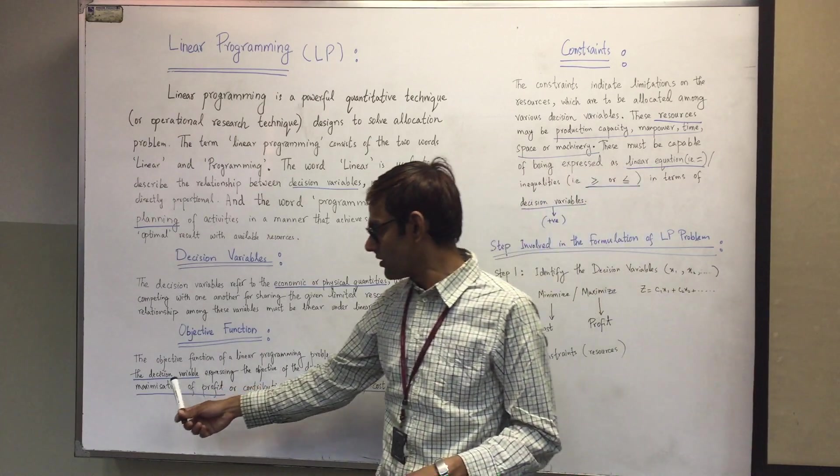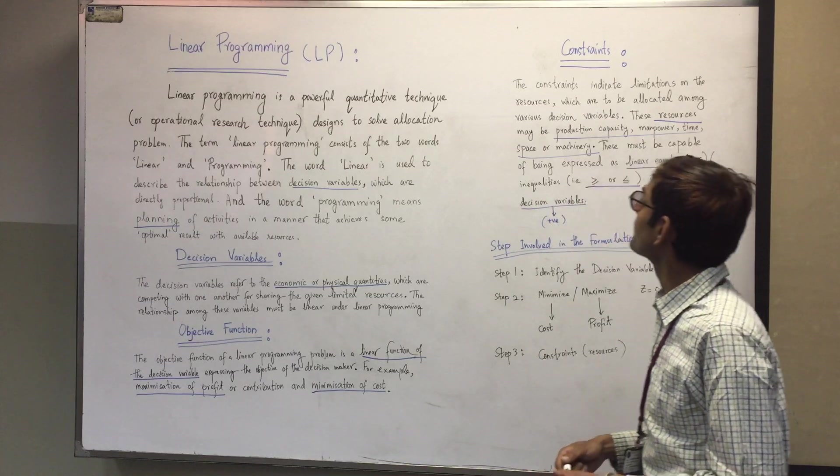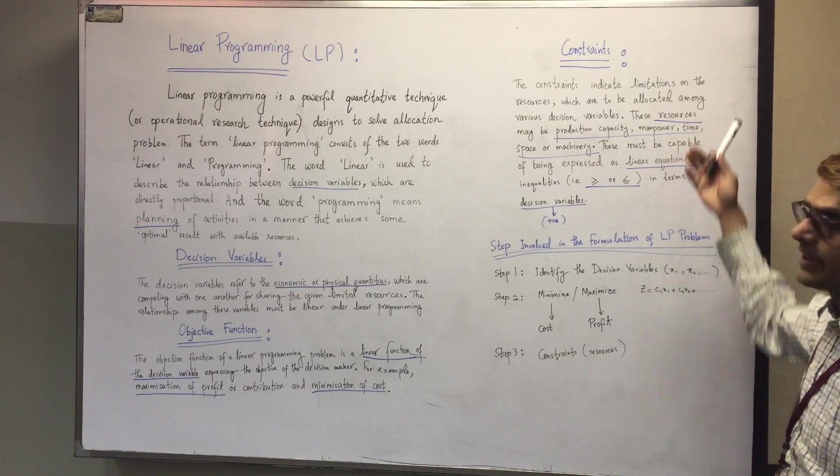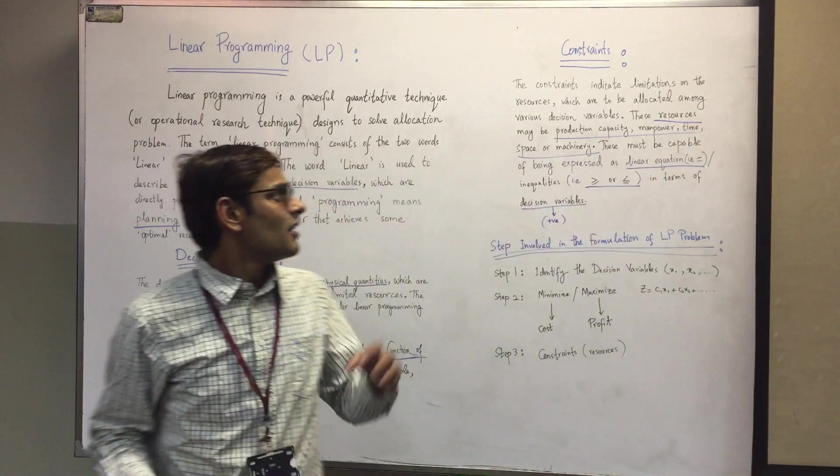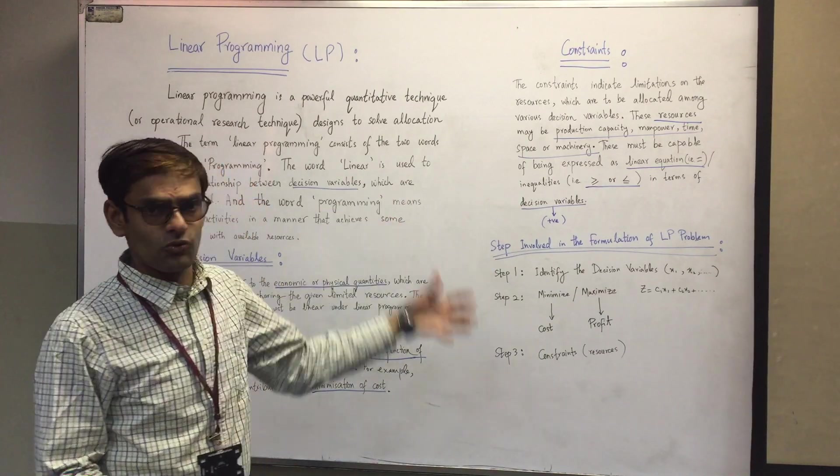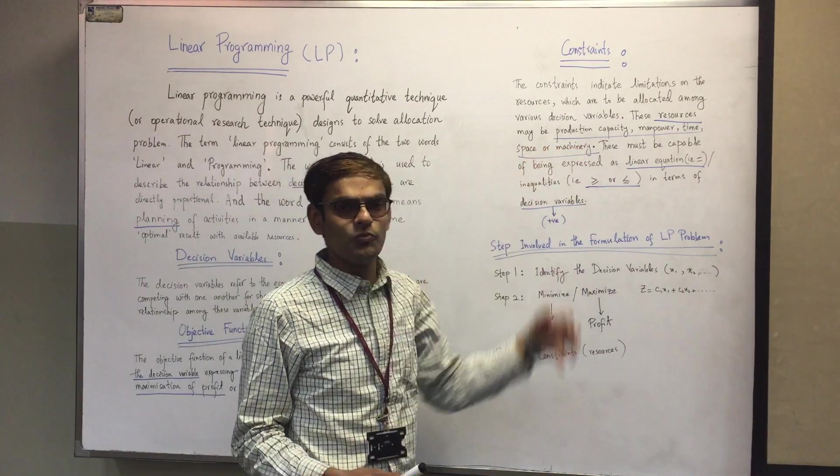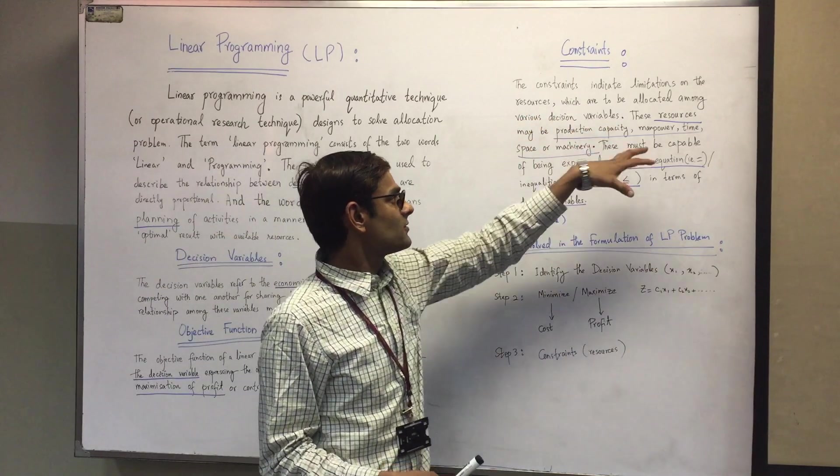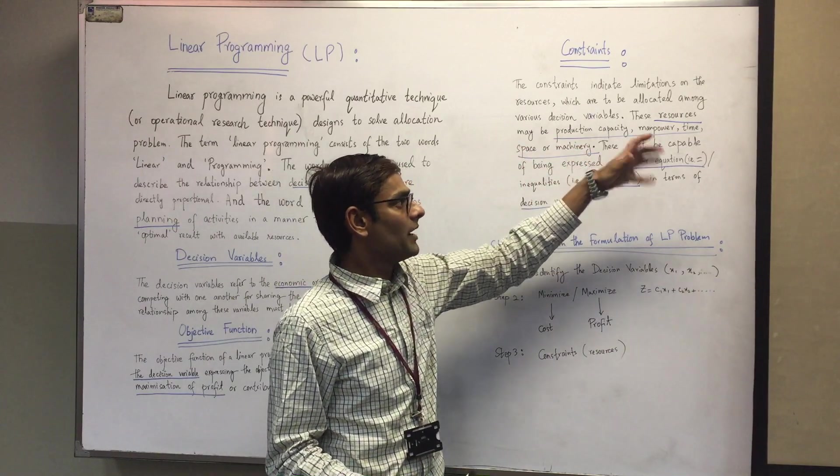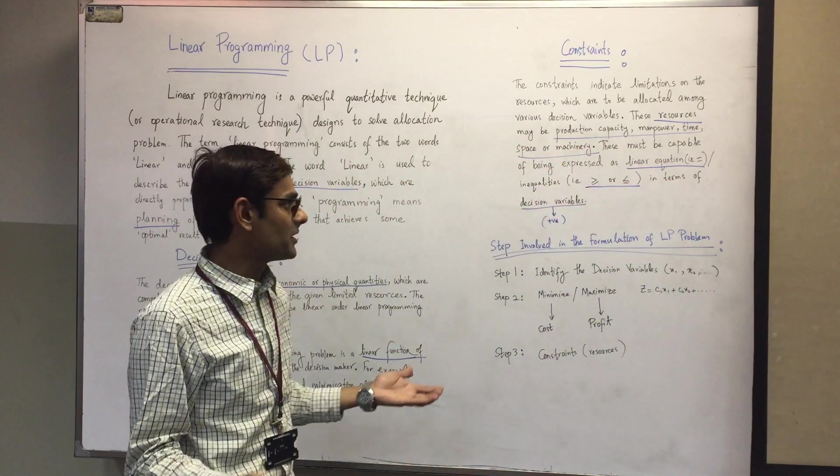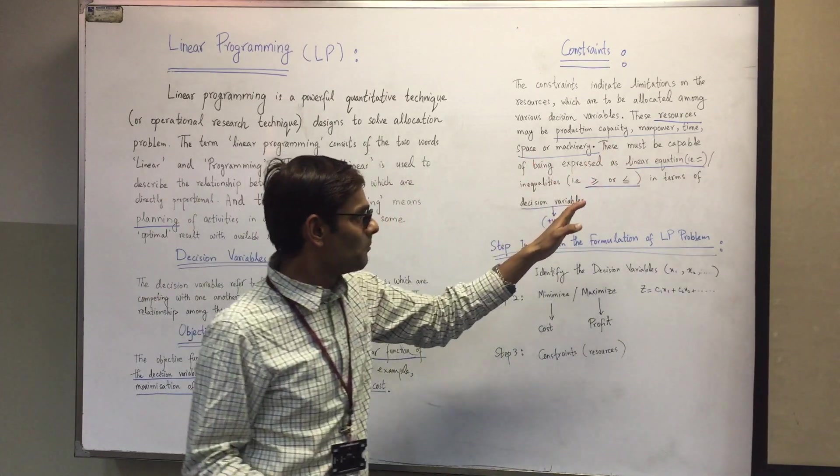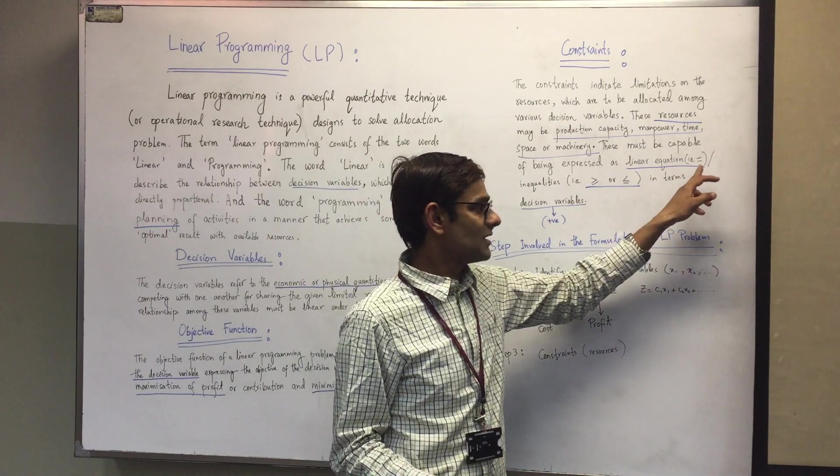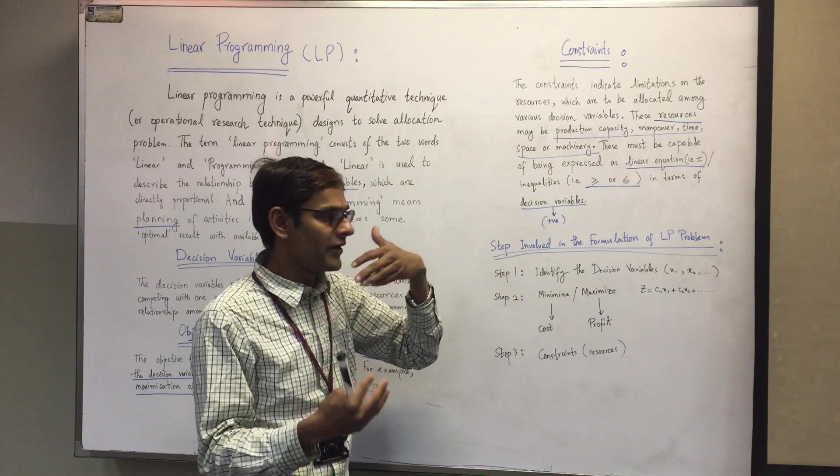The constraints indicate limitations on resources which are to be allocated among various decision variables. These resources may be production capacity, manpower, time, space, or machinery. Constraints must be expressed as linear equations or inequalities: equal to, greater than or equal to, or less than or equal to.